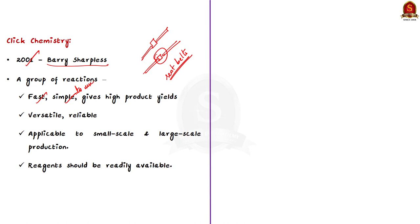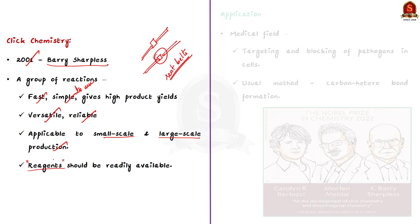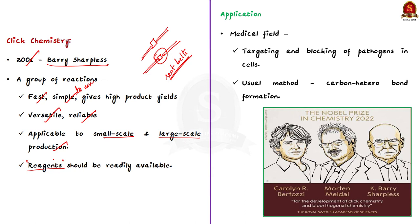Apart from being simple to use, a click reaction should be versatile, highly reliable and applicable to small scale and large scale production. Most importantly, the reagents should be readily available. We know that chemists often try to recreate complex chemical molecules found in nature, and in that way, click chemistry has its application in the field of medicine — specifically in how to target and block pathogens in the cells.